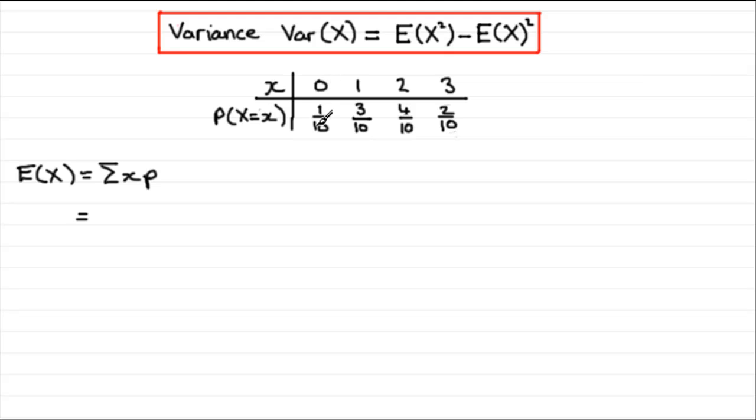For this table here, we're going to have 0 times 1/10 plus 1 times 3/10 plus 2 times 4/10 plus 3 times 2/10. So if we just write that in: 0 times 1/10 plus 1 times 3/10 plus 2 times 4/10 and finally 3 times 2/10.